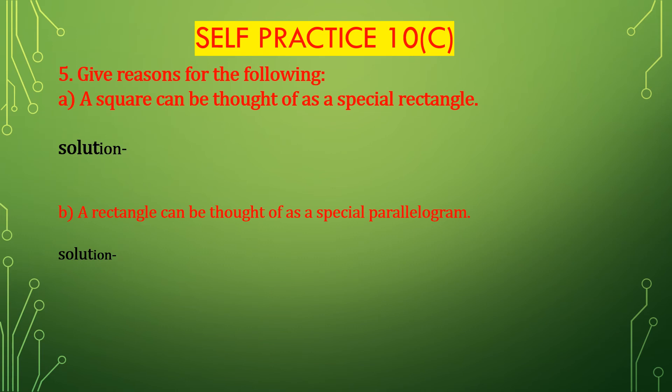Now we will solve question number 5: give reasons for the following. Bit A: a square can be thought of as a special rectangle. Yes, this is true. In a square, all four sides are equal, but in a rectangle, only opposite sides are equal. So a square is a special rectangle.